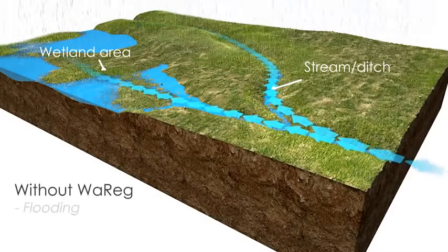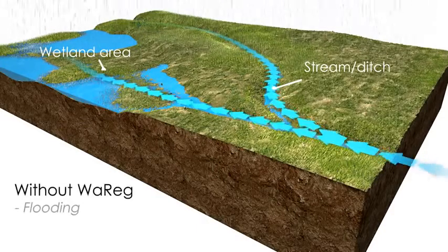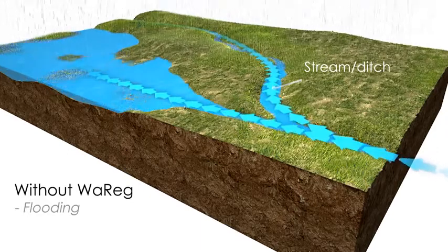Vareg regulates flow to wetlands to ensure water levels are not too high, thereby preventing damage to local flora and fauna.